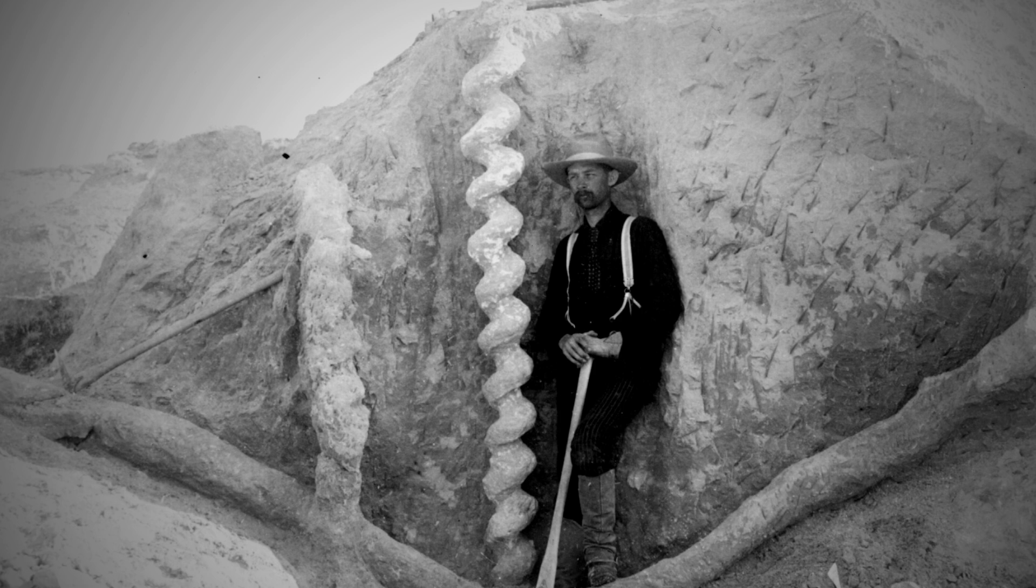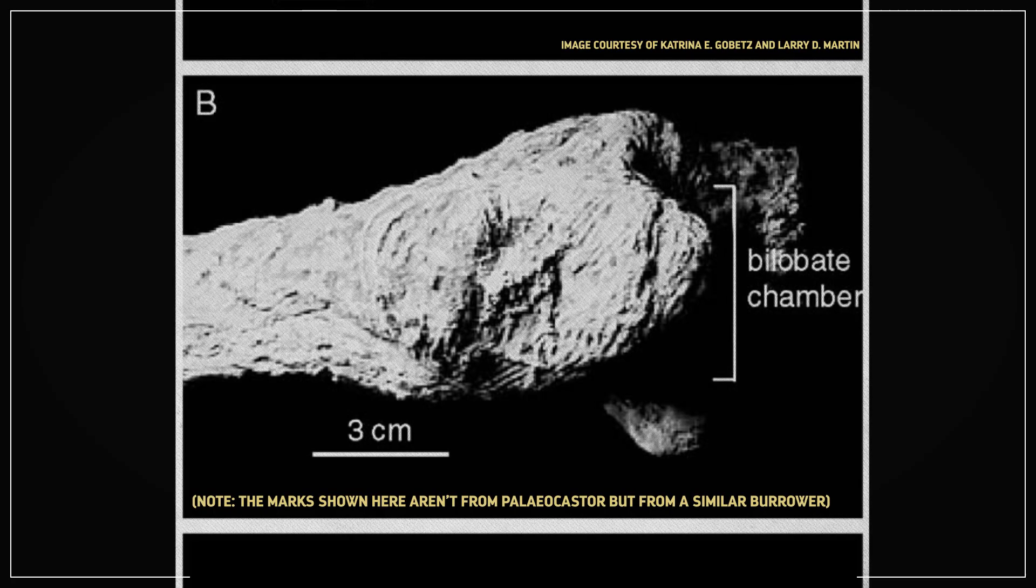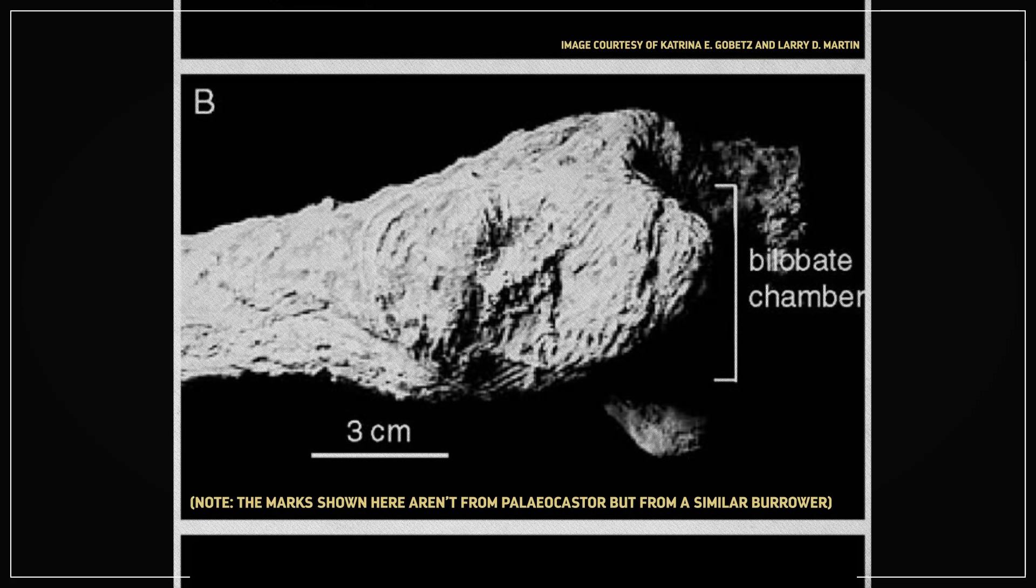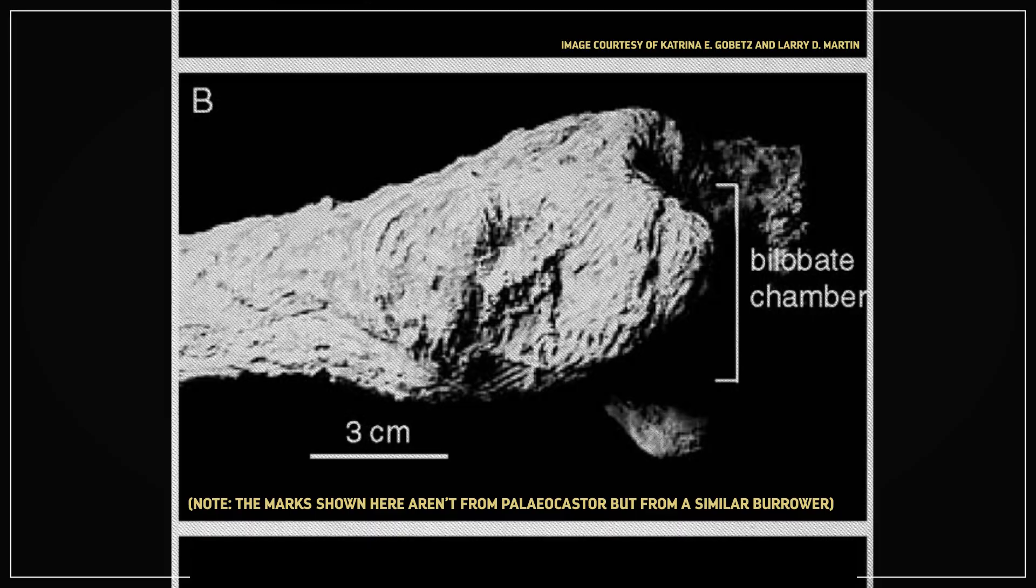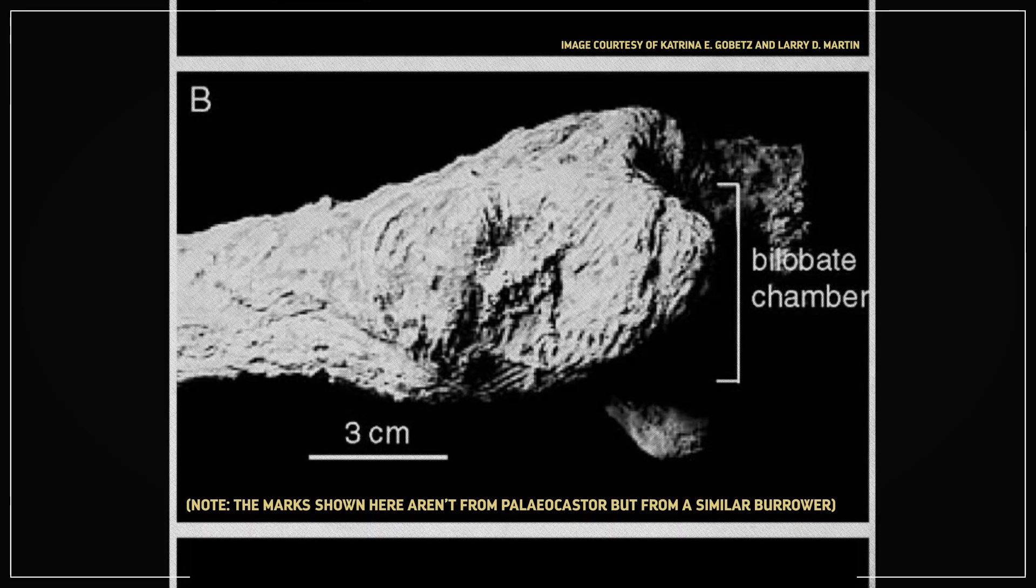It wasn't until 1977, almost 100 years after the first Devil's Corkscrews were reported, that two scientists found their smoking gun. They studied the distinctive scrapes on the edges of these burrows and found that they were the exact size and shape of Palaeocastor's teeth. Add to that the fact that some baby beavers were also found in the tunnels,